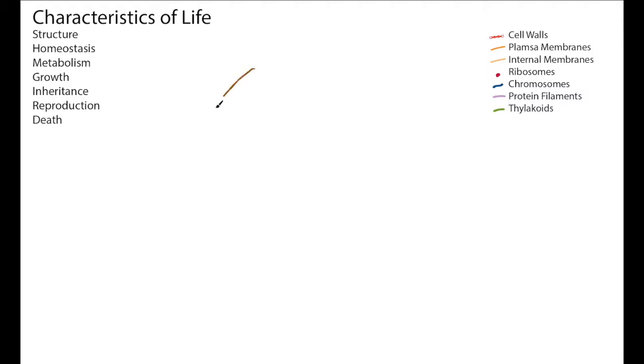So we can start with structure. Life on Earth is cellular and has a cell wall on the outside. This implements the structure. The cell wall forms the structure.